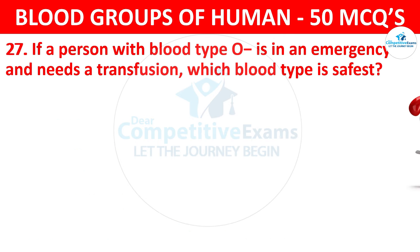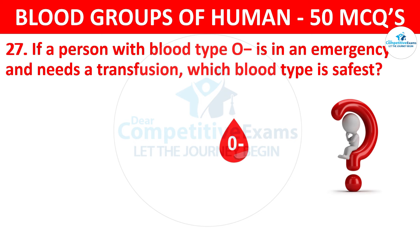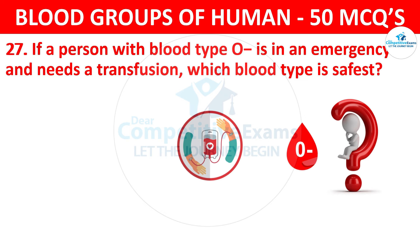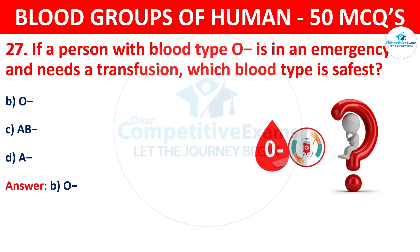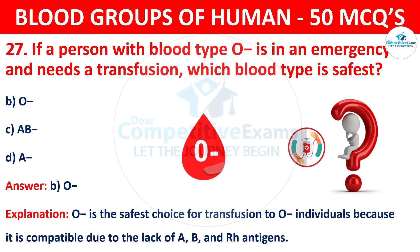Question 27: If a person with blood type O negative is in an emergency and needs a transfusion, which blood type is safest? The correct answer is B, O negative. O negative is the safest choice for transfusion to O negative individuals because it is compatible due to the lack of A, B, and RH antigens.